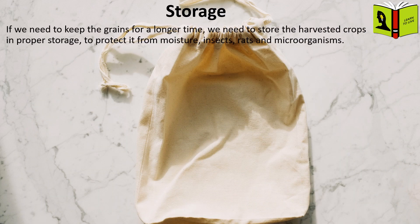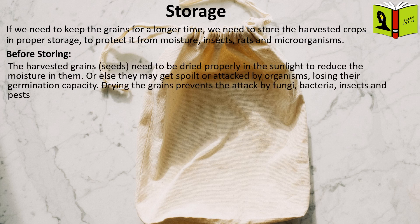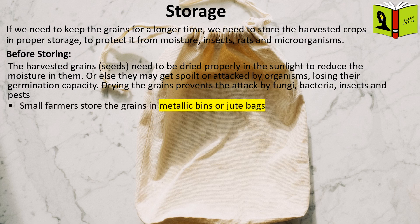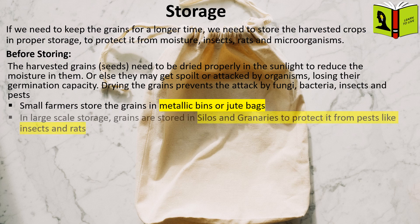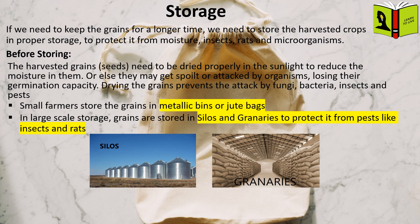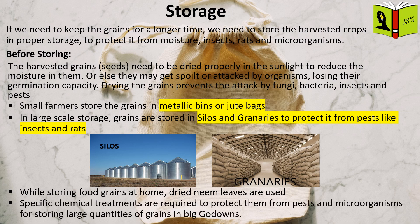If we need to keep the grains for a longer time, we need to store the harvested crops in proper storage, to protect them from moisture, insects, rats, and microorganisms. Before storing, the harvested grains need to be dried properly in the sunlight to reduce the moisture in them, or else they may get spoiled or attacked by organisms, losing their germination capacity. Drying the grains prevents attack by fungi, bacteria, insects, and pests. Small farmers store the grains in metallic bins or jute bags. In large-scale storage, grains are stored in silos and granaries to protect them from pests like insects and rats. While storing food grains at home, dried neem leaves are used. Specific chemical treatments are required to protect large quantities of grains in big go-downs from pests and microorganisms.